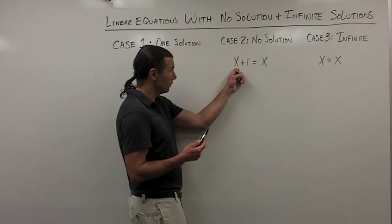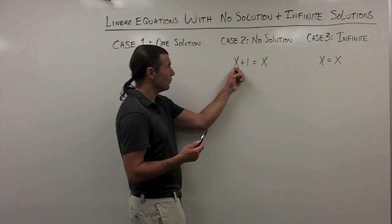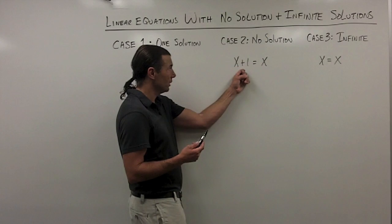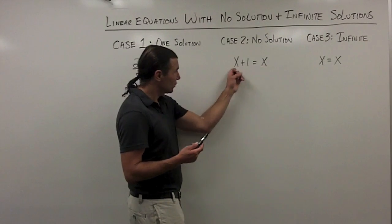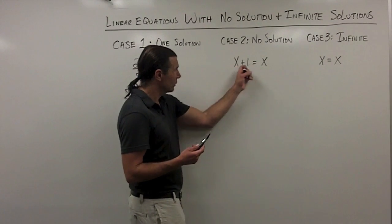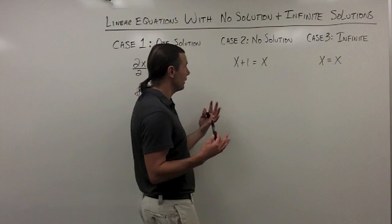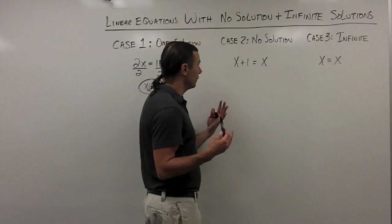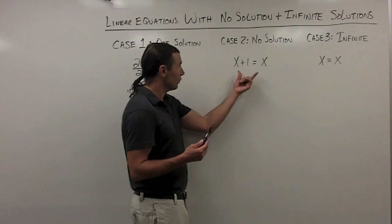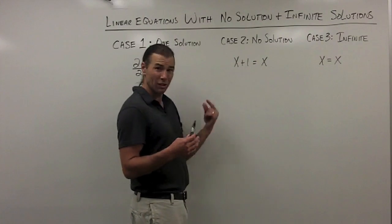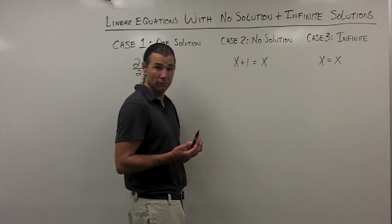For example, if I put a 2 in here, on the left side I have 2 plus 1 is 3, and 2 on the right side — it's not going to work. If you check a couple numbers here, you're going to quickly see that there isn't a single number that's going to work in this equation. So this equation has no solution.